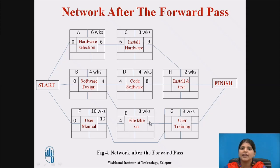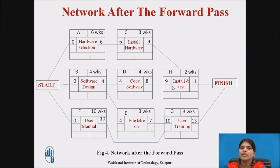For E, precedent B finishes at 4; earliest finish = 4 + 3 = 7. For G, precedents are E (finishes at 7) and F (finishes at 10). We take the larger value — 10 — as the earliest start for G; earliest finish = 10 + 2 = 12. For H, precedents are C (finishes at 9) and D (finishes at 8); take the larger value 9; earliest finish = 9 + 4 = 13. After G and H complete, the project finishes. Since 13 is the larger number, the project takes 13 weeks. This is how we calculate the forward pass.